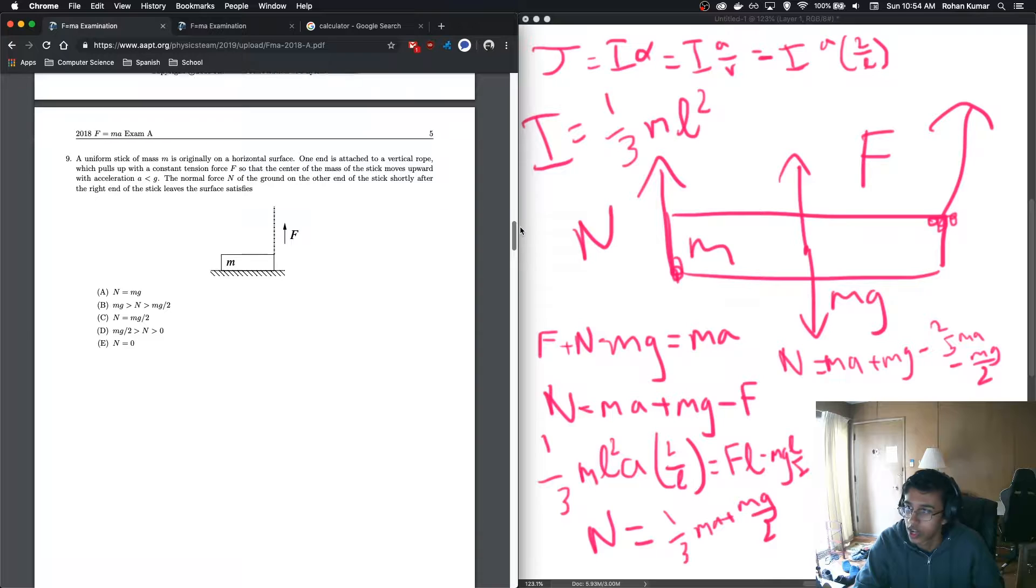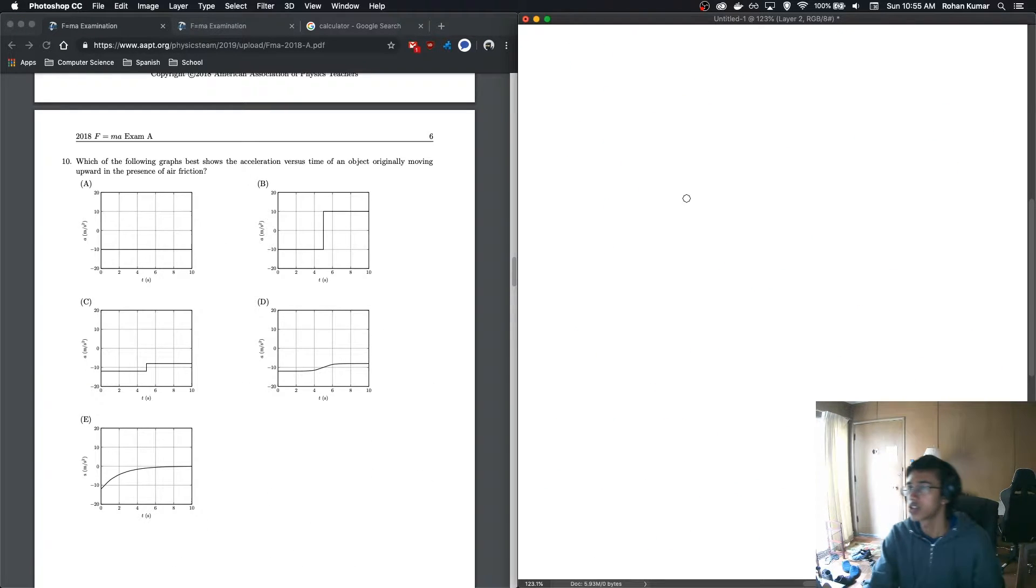Moving on to number 10. Which of the following graphs best shows the acceleration versus time of an object originally moving upward in the presence of air friction? Didn't we do a similar problem to this already? Oh, acceleration versus time though, not velocity versus time.